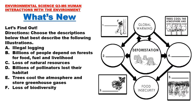What's New? Let's find out. Choose the descriptions below that best describe the following illustrations. Our choices are: A. Illegal logging. B. Billions of people depend on forests for food, fuel, and livelihood. C. Loss of natural resources. D. Billions of pollinators lost their habitat. E. Trees cool the atmosphere and store greenhouse gases. And F. Loss of biodiversity.